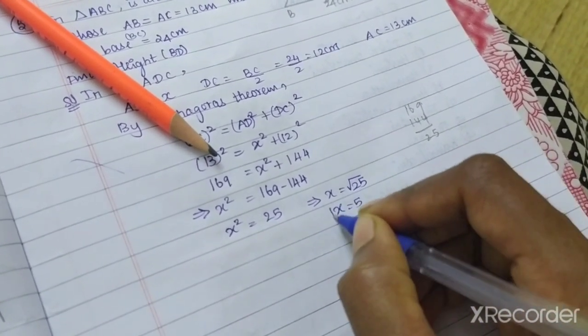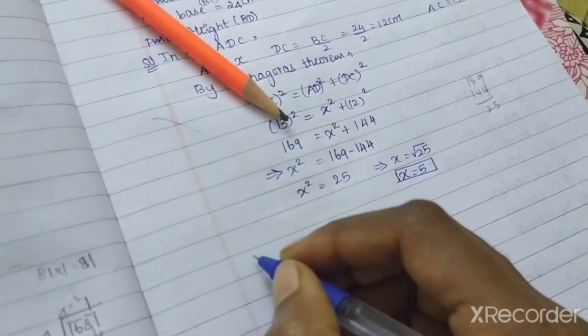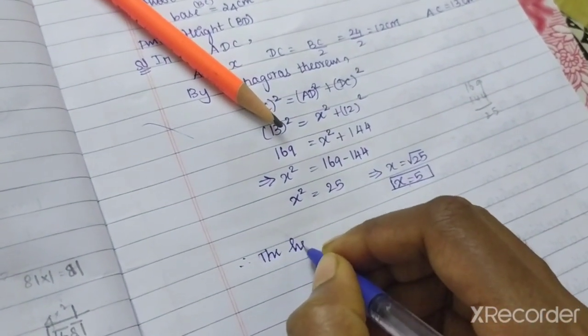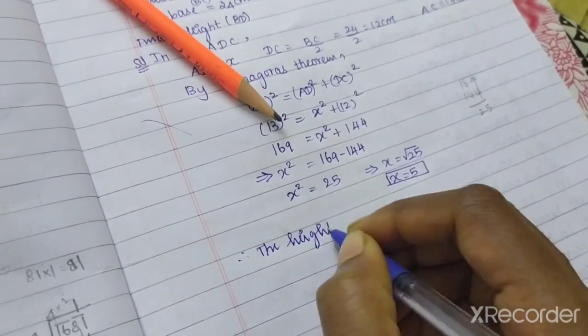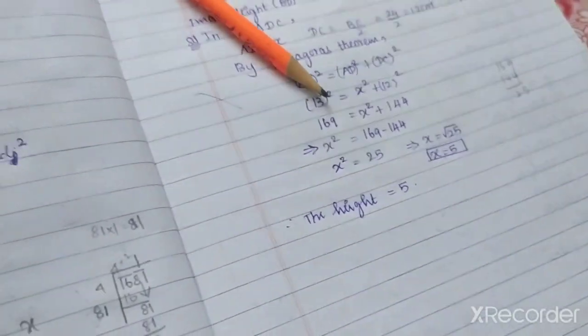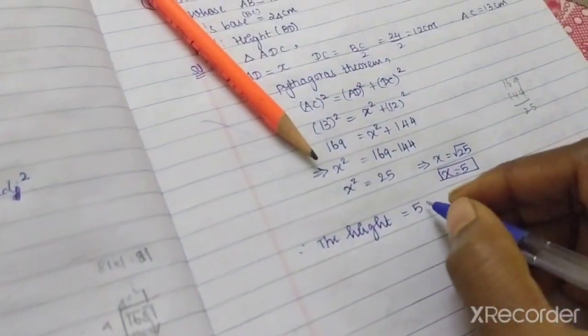This implies X equals root 25, so X equals 5. Therefore, the height is equal to 5 cm.